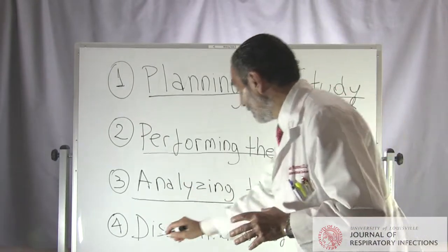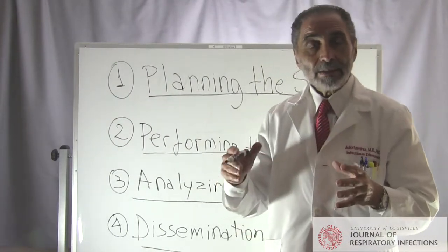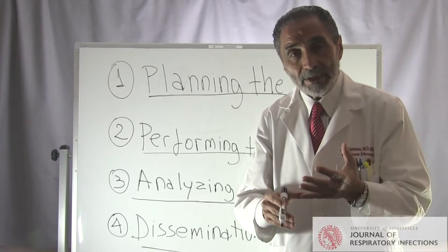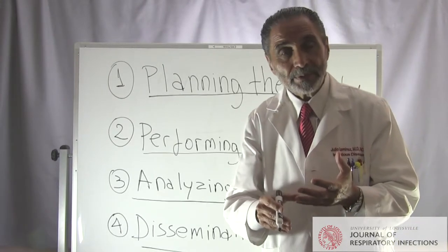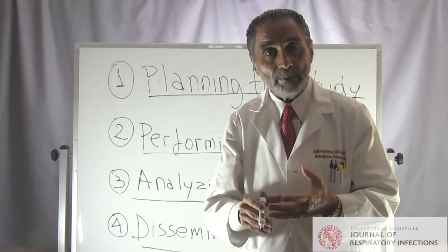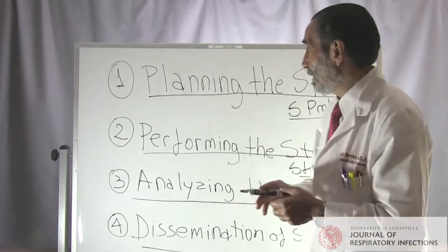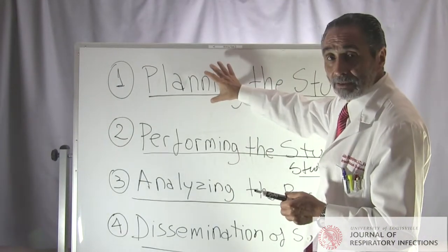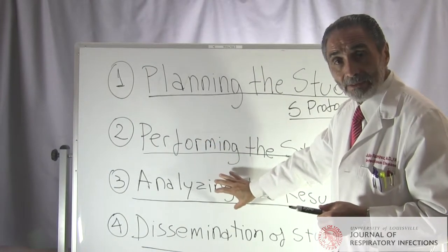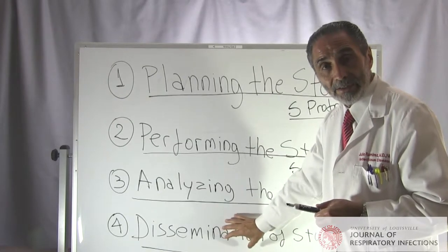Finally, step four is dissemination of study findings. Here we look at presentations, write abstracts, posters, and ultimately write a manuscript for publication in a peer-reviewed journal. So the four steps of clinical research are: planning the study, performing the study, analyzing the study results, and dissemination of our study findings.